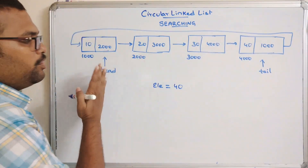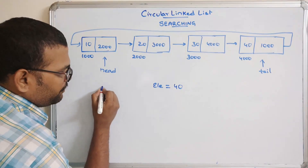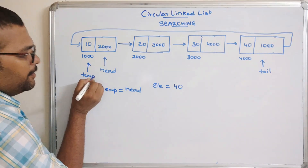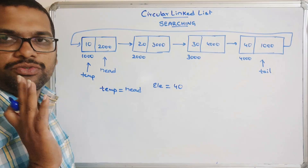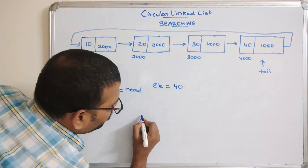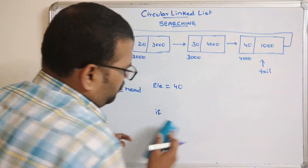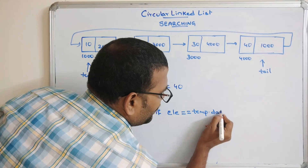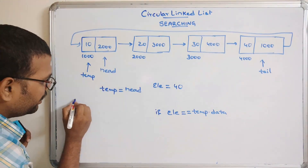To traverse the pointer from first node to last node, the first step is to initialize head to some temporary variable. Obviously one temporary variable will be pointing towards the head. We need to modify this because head should always point towards the first node. To traverse, we need to compare: if element is equal to temp dot data — if temp is 1000, temp dot data means 10.